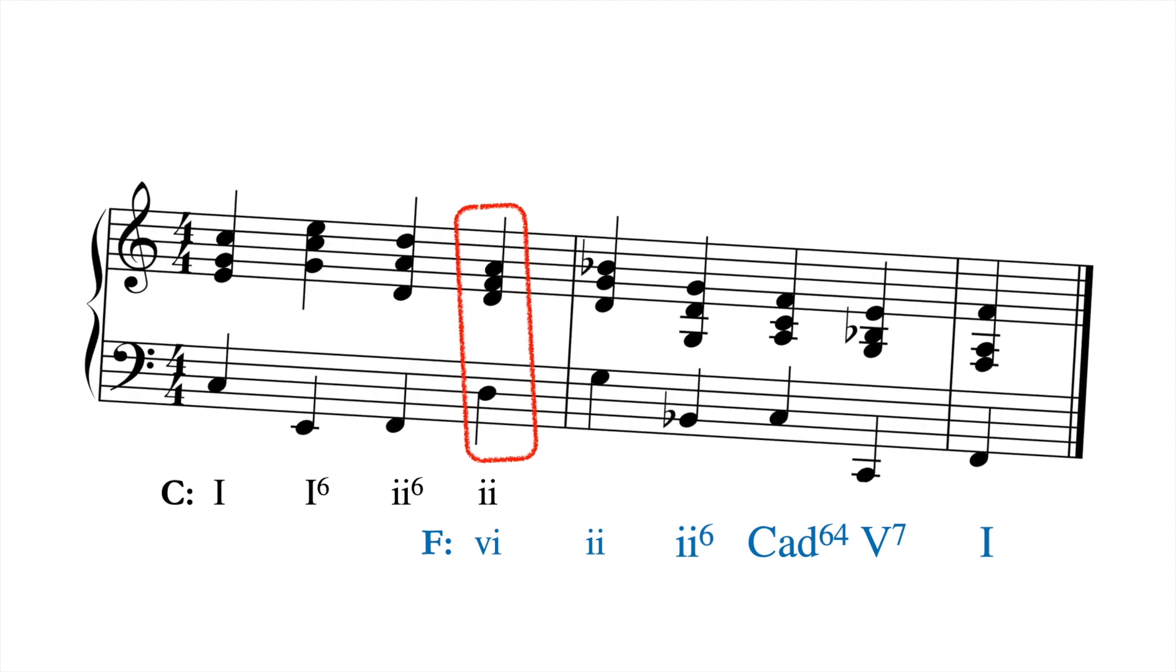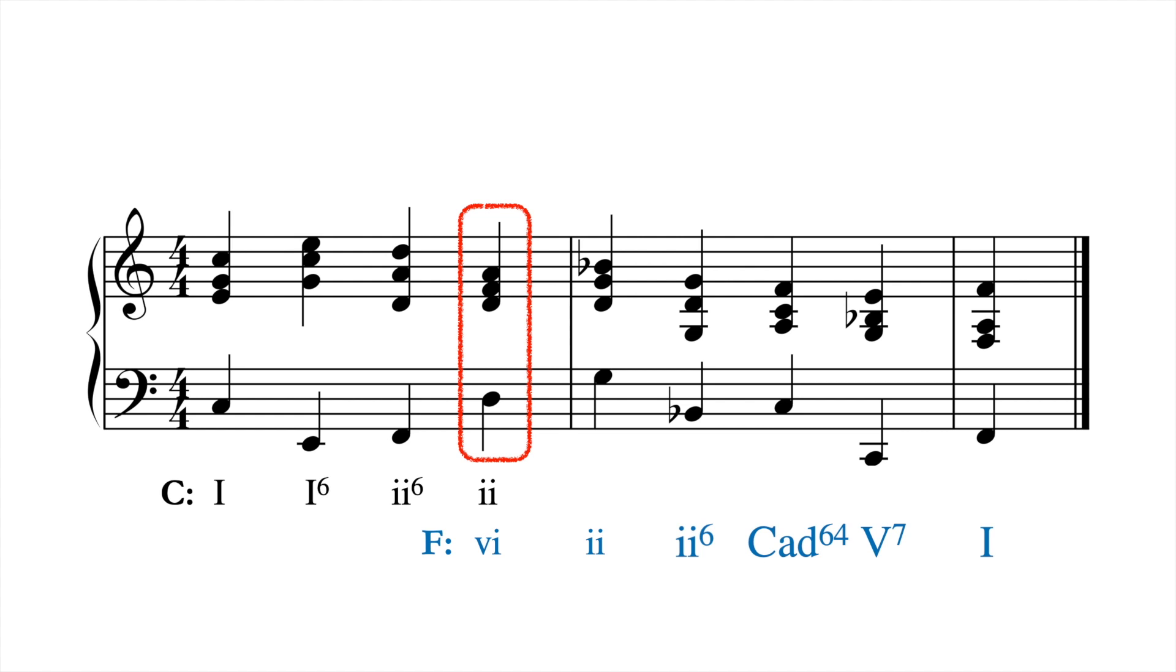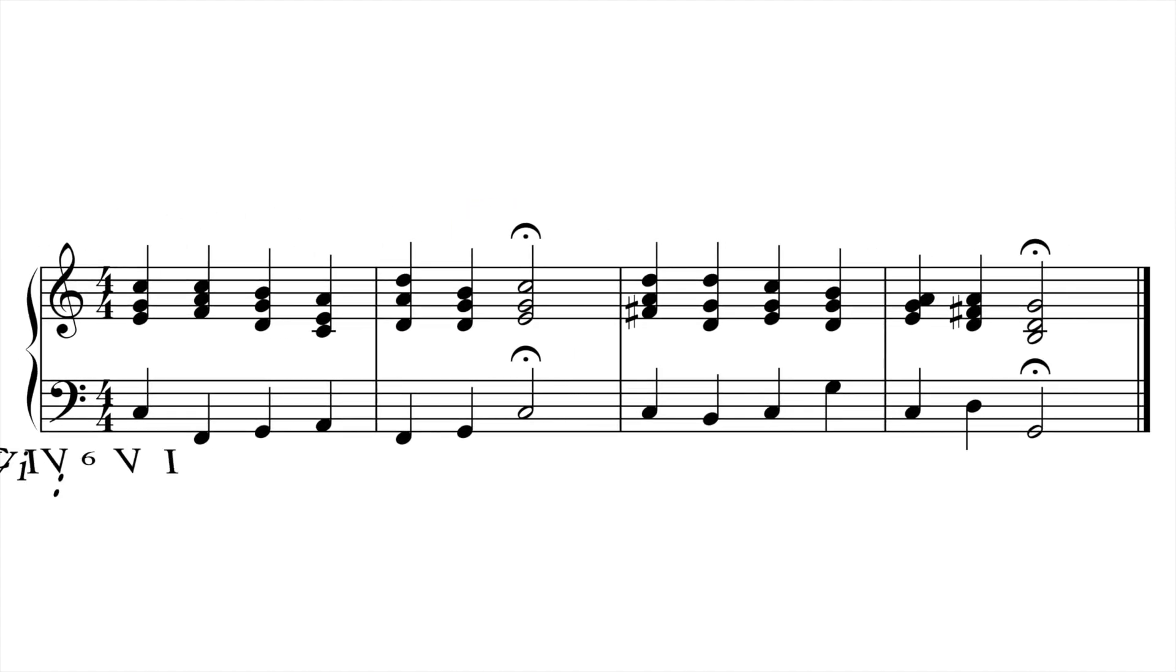A slightly more intense kind of pivot modulation sometimes happens between phrases. Here's an example. Here the first phrase starts and ends in C major. The second phrase starts right away with a V4/2 chord in G major and then stays there. The fact that some people may hear this, at least at first, as a secondary dominant in C shows the sense of ambiguity the modulation can create, at least temporarily.